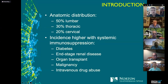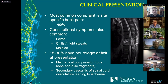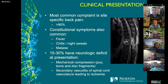Certain patient groups are more susceptible, including diabetics, patients with systemic immunosuppression such as end-stage renal disease, organ transplant patients, patients with malignancy, and IV drug abuse has become a much more common cause. When patients present clinically, the most common complaint is site-specific back pain, but constitutional symptoms are also very common — fever, chills, night sweats, malaise. About 15 to 30 percent will have a neurologic deficit on presentation. Neurologic deficit can develop through mechanical compression of the spinal cord from pus, bone or disc fragments, or through secondary vasculitis of the arterial supply to the spinal cord causing ischemia.